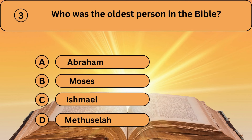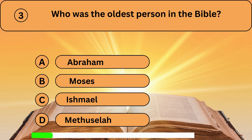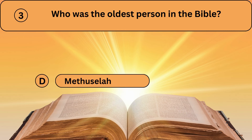Question three. Who was the oldest person in the Bible? A. Abraham. B. Moses. C. Ishmael. D. Methuselah. Methuselah is the correct answer.